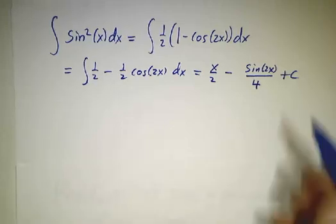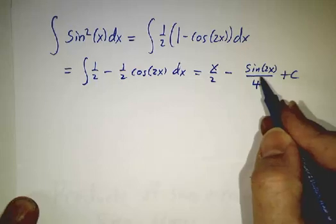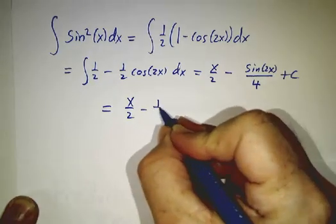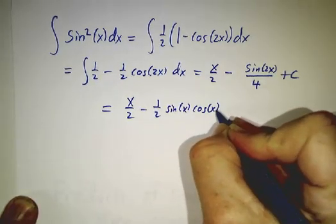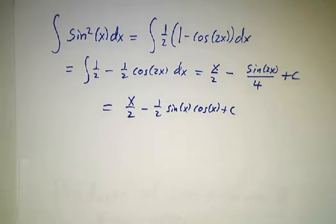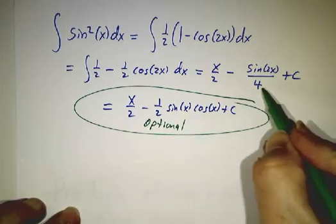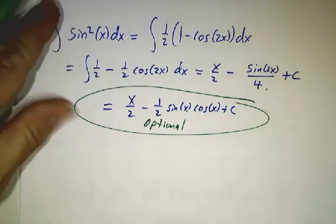Now if you want, you can take this and convert it back into functions sin of x and cos of x. So this does turn out to be x over 2 minus 1 half sin of x cos of x plus c. But this last step is optional. This is a correct answer. There are times that you want to convert it back to just sin and cos. There are times that you don't have to.